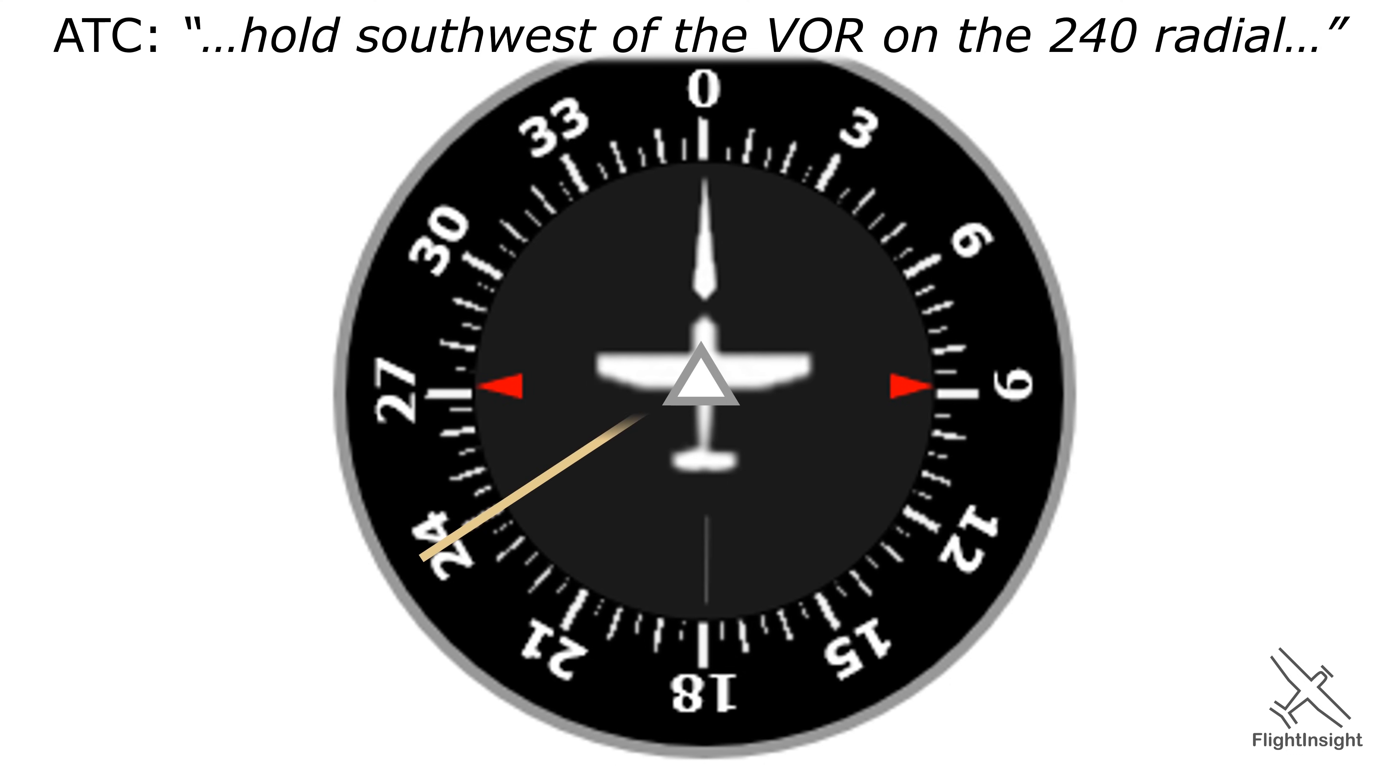Draw the line from 240 to the fix, no mention of turns, so that means right turns. We should be able to see that a direct entry works best. This is the same example from the first scenario.